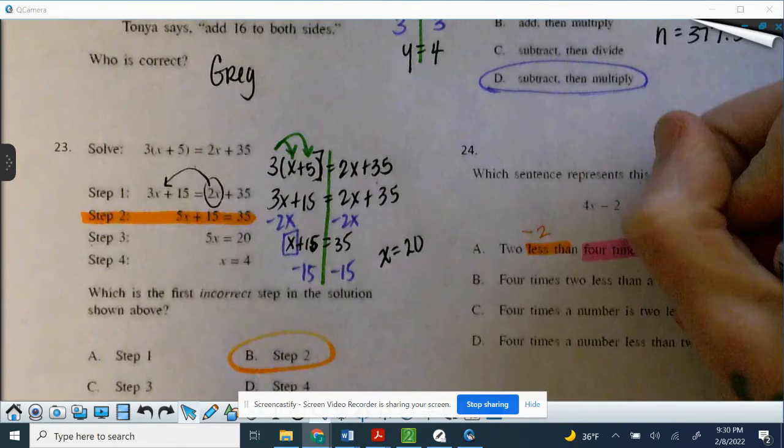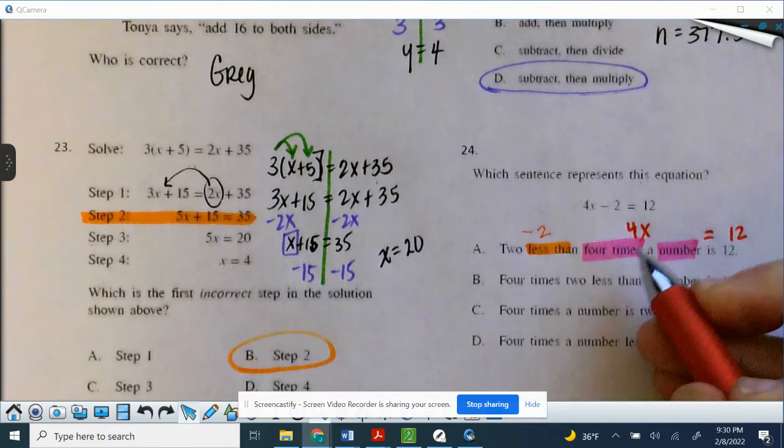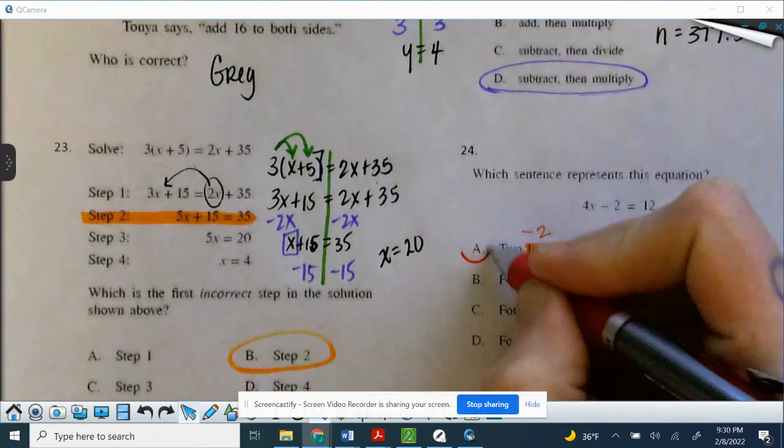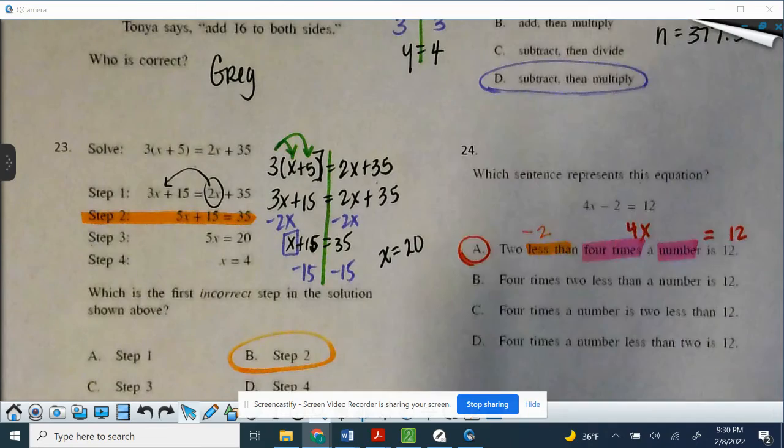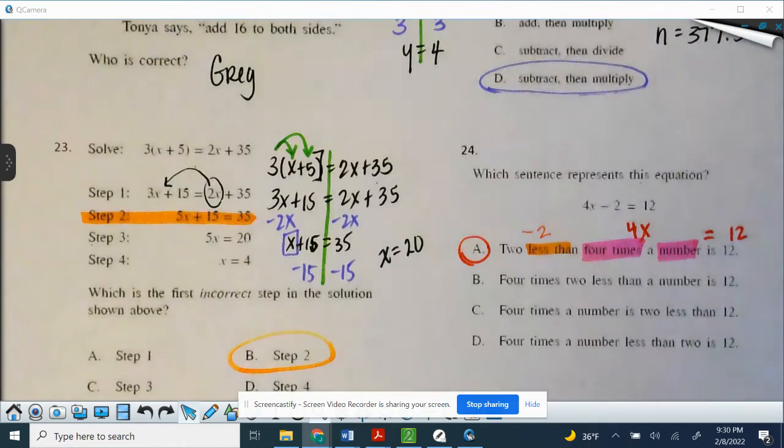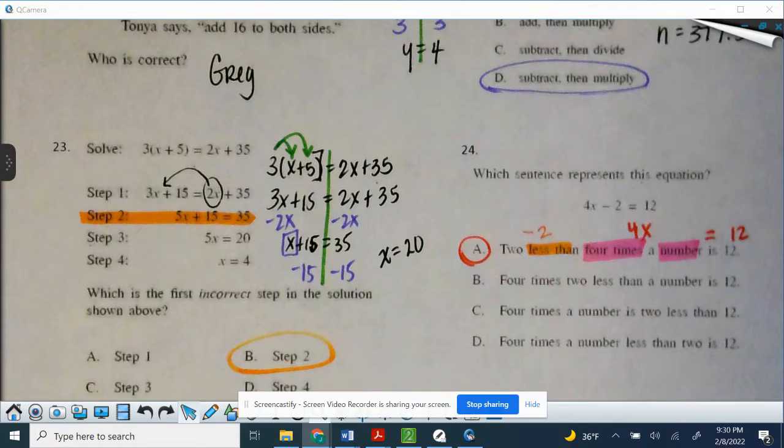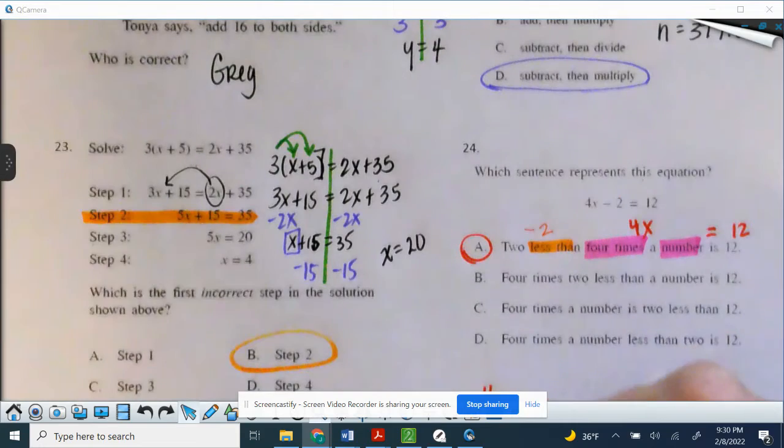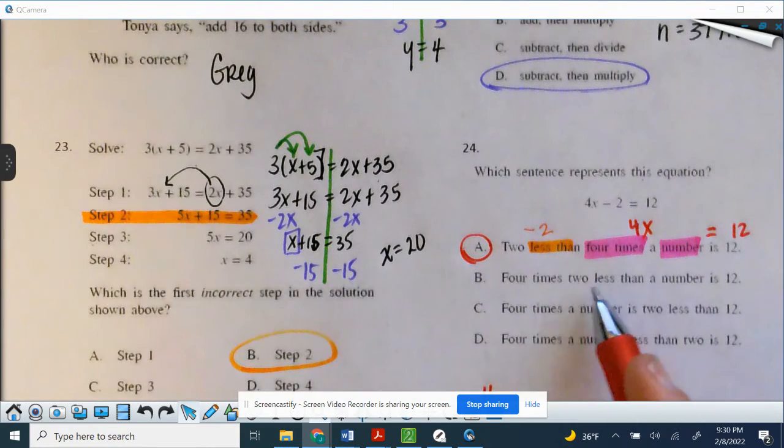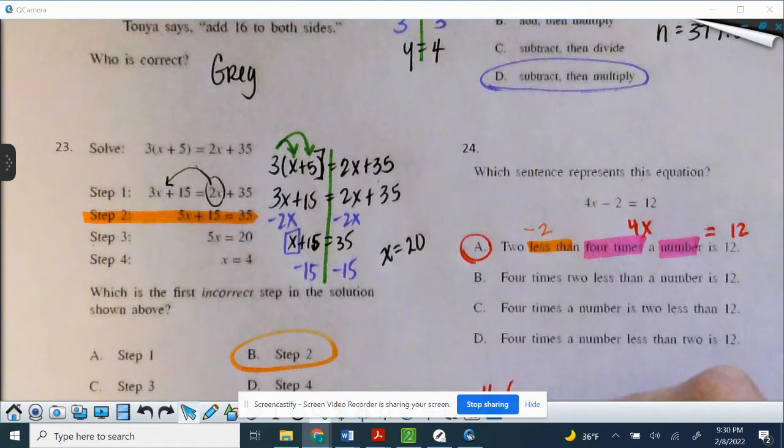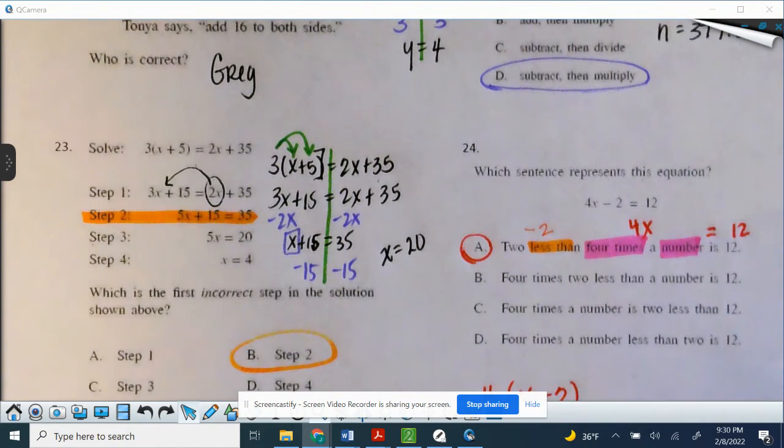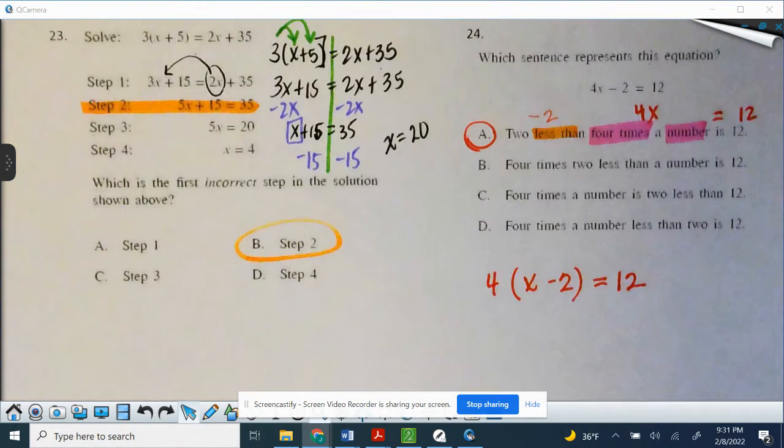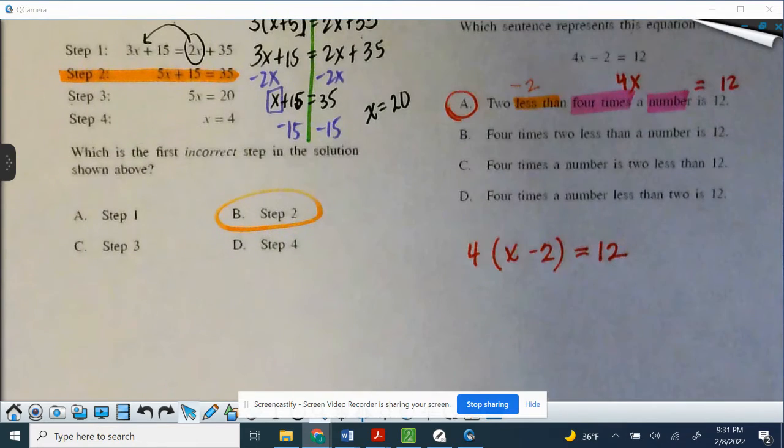So 4 times a number equals 12, 4 times 2 less than 4 times a number, so that would be 4x minus 2 equals 12, that is our answer. But hold on, let's look at the other ones just for practice. So 4 times 2 less than a number, so 4 times, that means 4 first, we're going to multiply 2 less than a number, so that means x minus 2 is 12. So 4 times x minus 2 equals 12 would be B.